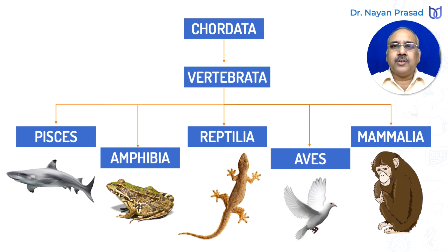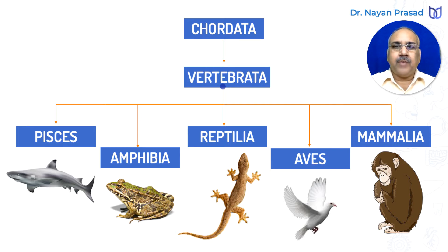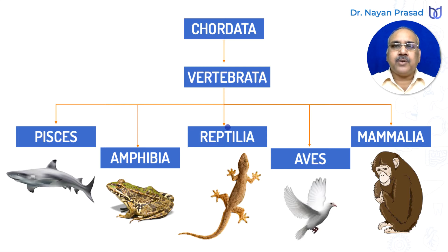Subphylum Vertebrata is the major group of phylum Chordata. Chordates include a notochord in their body and are commonly called rod-bearing animals. Vertebrates, the major group under Chordata, include animals having backbone and skull. Vertebrata is further divided into five major groups.